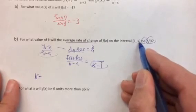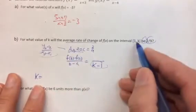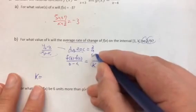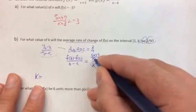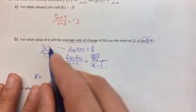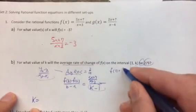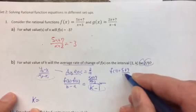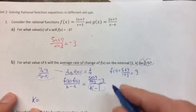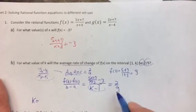The y values: our second y value is whatever we get plugging k into f of x, which is 5k plus 7 over k plus 3. Our original y value is f of 1: 5 times 1 divided by 1 plus 3, which is 12 divided by 4, which is 3. So this is our average rate of change expression, and it equals 2 ninths. We need the average rate of change on the interval from 1 to k to equal 2 ninths.